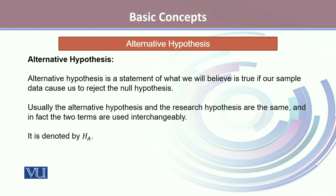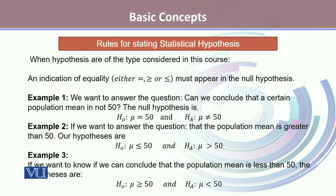The statement opposite to the null hypothesis is called the alternative hypothesis. The alternative hypothesis is a statement of what we believe is true, and it is the statement in favor of which we gather evidence. The data from our sample cause us to reject the null hypothesis. Usually, the alternative hypothesis and the research hypothesis are the same — in fact, the two terms are used interchangeably. If the null hypothesis is denoted by H0, the alternative hypothesis is denoted by HA.